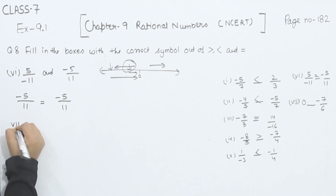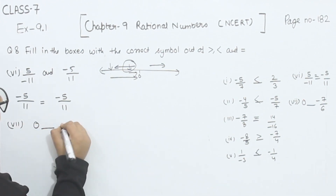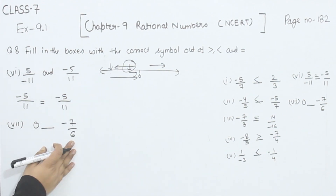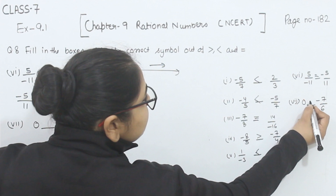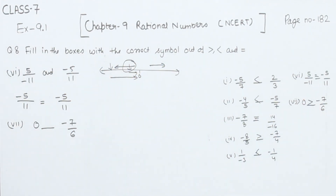Now comes part 7. This is 0 and minus 7 by 6. As we know, negative numbers are always smaller than 0, so 0 is greater than the negative number. That completes part 7 and question number 8. In the next video, we are going to start with question number 9.